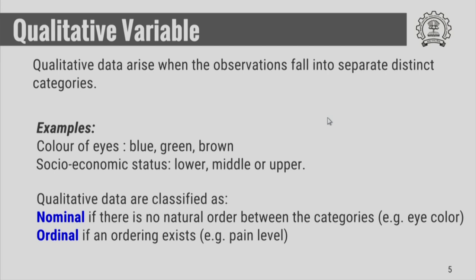Now, let us talk about qualitative variables. Qualitative data arise when the observations fall into separate distinct categories. Examples include